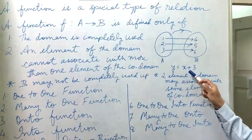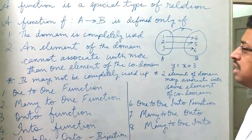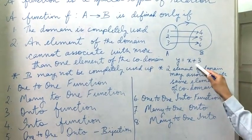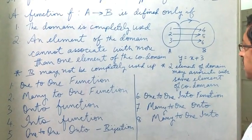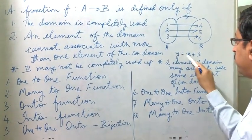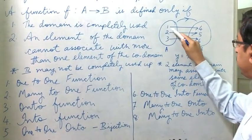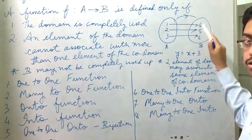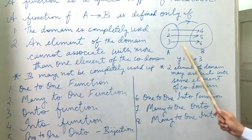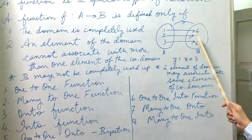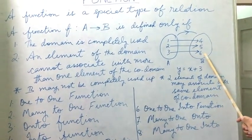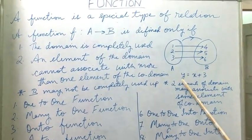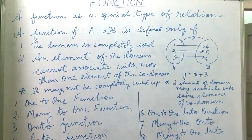Consider y equals x plus 3. We can call the function a map from set A to set B. If A is the set of x values, when x equals 1 we get 1 plus 3 equals 4, so 1 is associated to 4. Similarly, x equals 2 gives 5, and x equals 3 gives 6. There is a mapping happening from A to B, so it is a function.